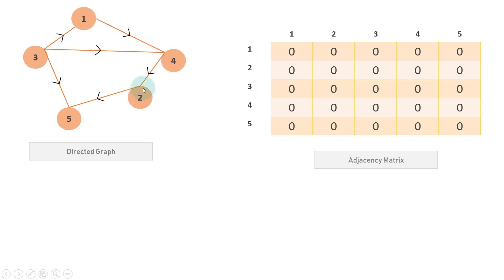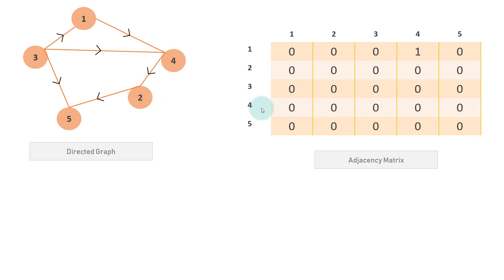We'll read the graph and fill the adjacency matrix to show which two nodes are connected. The first edge is between 1 and 4, so we take vertex 1 and vertex 4 and make that value one. Now there is an edge from 1 to 4. Another edge is 4 to 2, so we update that location to one. Then 2 to 5 — we update the matrix at position two to five, and that becomes one.